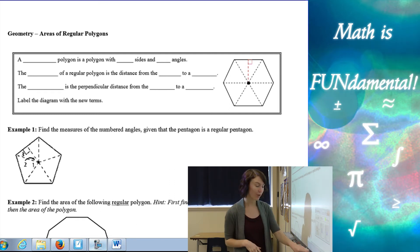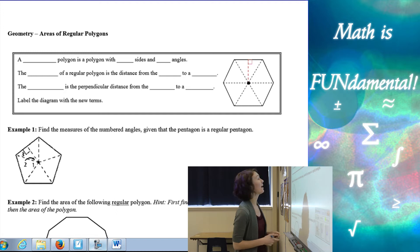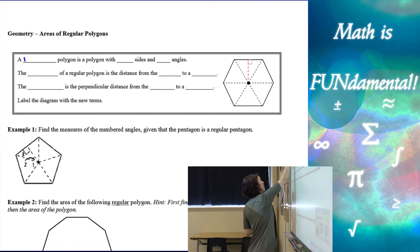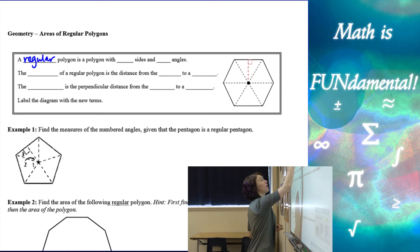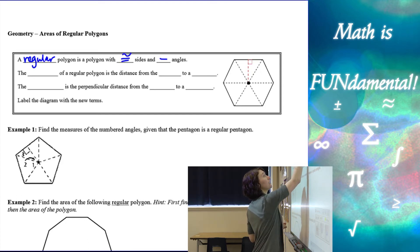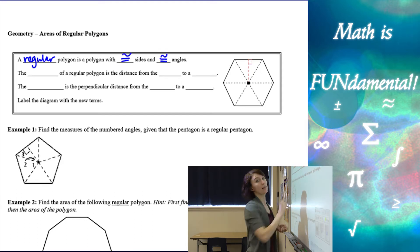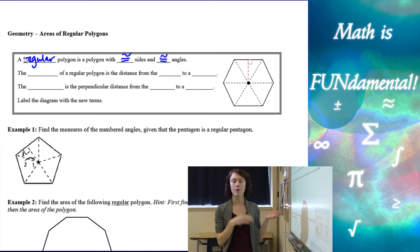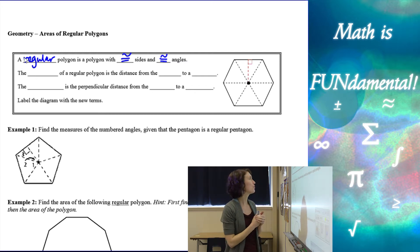We're going to start off by defining what a regular polygon is. A regular polygon is a polygon with congruent sides and congruent angles. This is a little bit of a review from a few chapters ago.